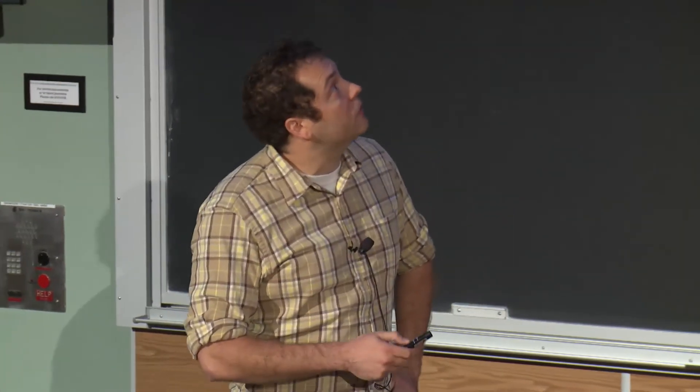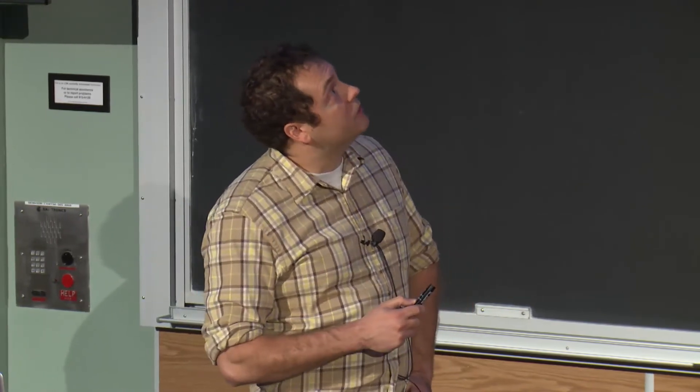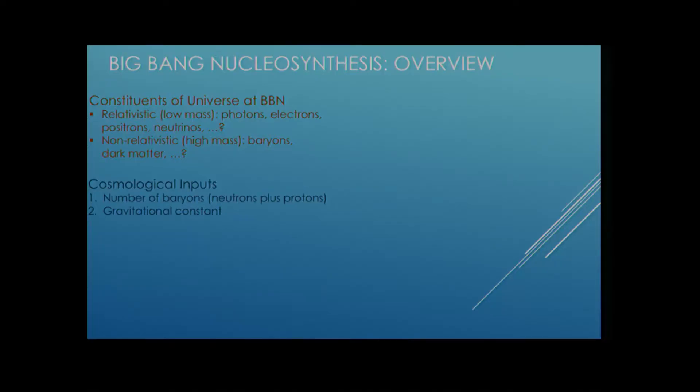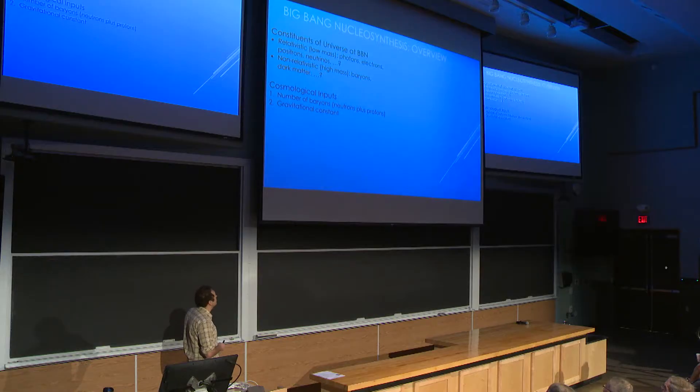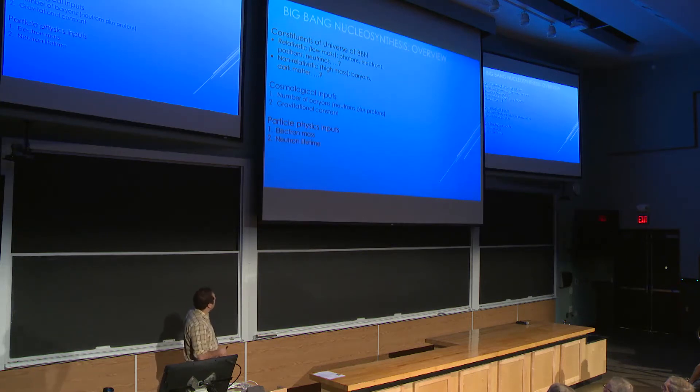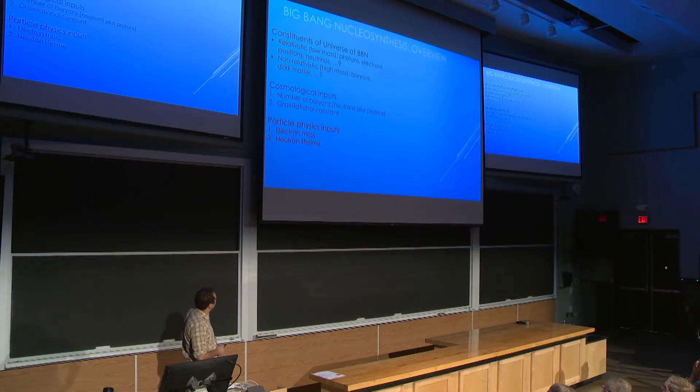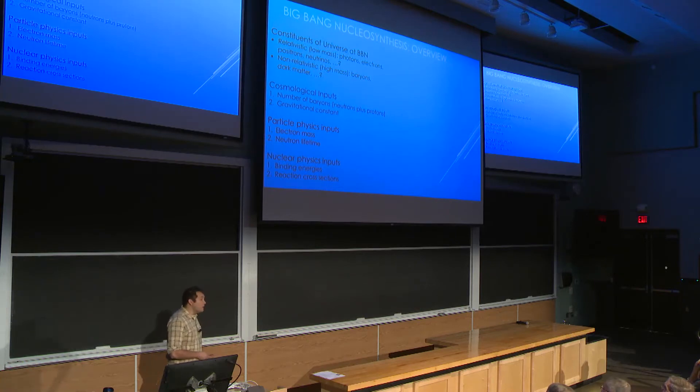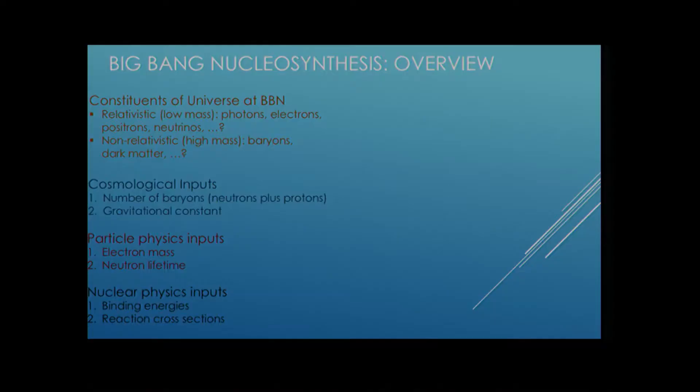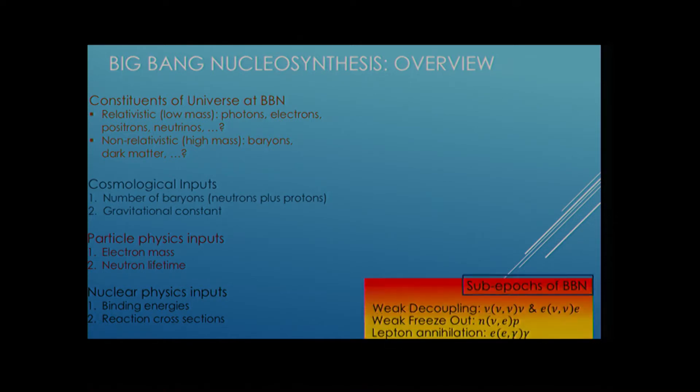The non-relativistic are the baryons. These are just neutrons and protons, and then the dark matter, which will not be important in this talk. To do a BBN calculation in the multiverse, you have to give it a few inputs. First, you have to give it your cosmological inputs. These are the number of baryons, neutrons plus protons, which we'll need for our nuclear reaction rates, and also the gravitational constant, which sets the Hubble expansion rate of the universe. For your particle physics inputs, you need the mass of the electron, and you need to know the lifetime of the neutron.